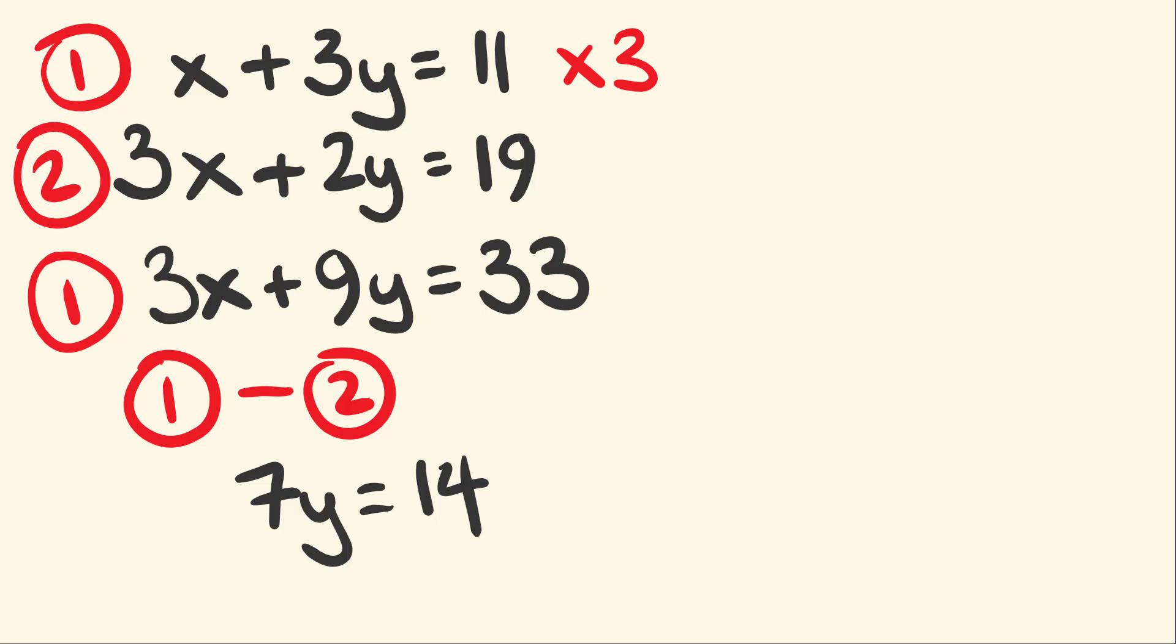And therefore, we can now solve for this really simply. Because if 7y is equal to 14, well, y is going to be equal to 2. So there you go. We've got our first variable solved that y is equal to 2. I'll put a little circle around that just so we can see that.